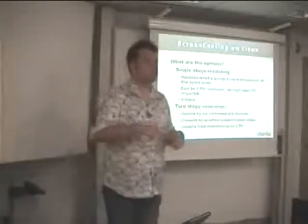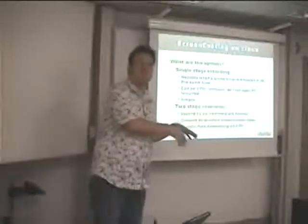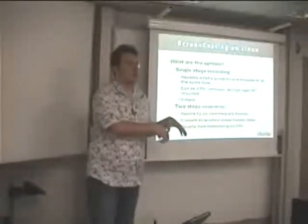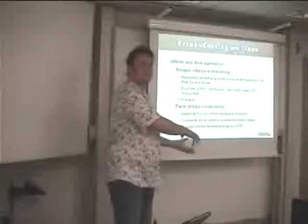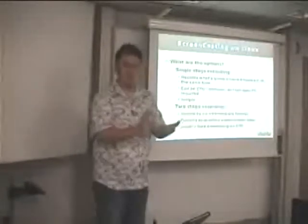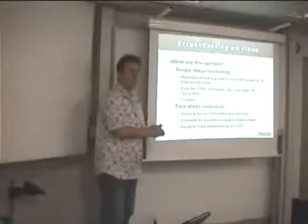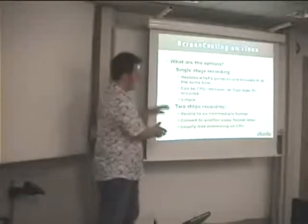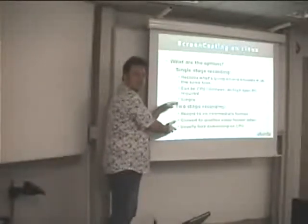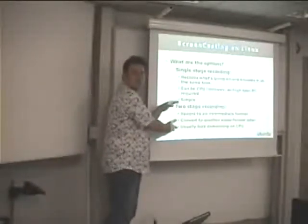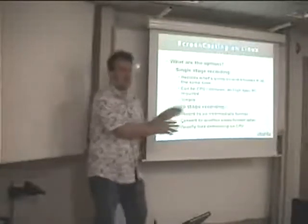The second option is a two-stage recording. You record what you're doing and it gets saved to some intermediate format. Then you use another utility to convert that intermediate format into an OGG, MPEG, AVI, or whatever you want to actually distribute. I personally go for this because it uses less CPU time and you end up with a nicer looking video at the end.